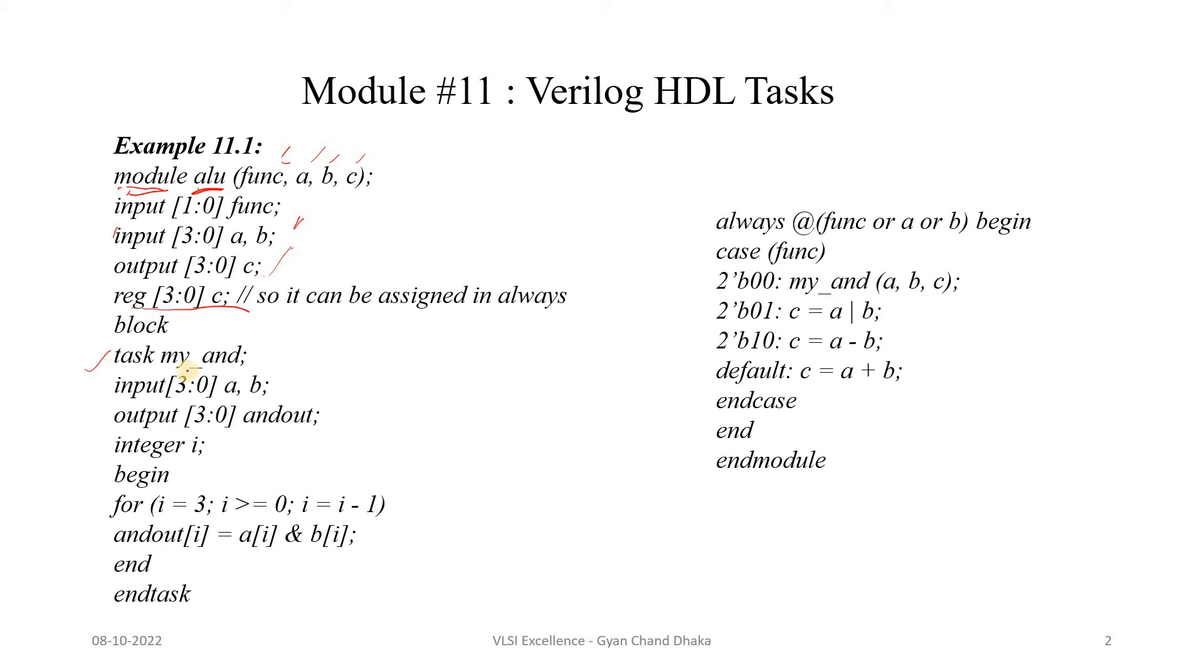So here we have a task. Let's see what this task is going to do. This task is basically going to take two inputs a and b, and it will give one output. That output is a bitwise AND operation. If you see here, we have a for loop. This for loop is basically going from 3 down to 0. The bitwise AND operation is performed and the output is assigned to and_out output port.